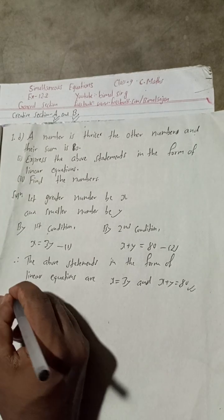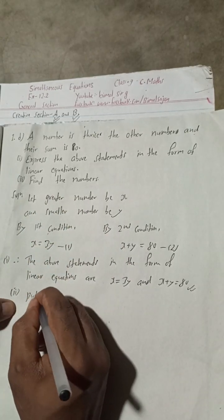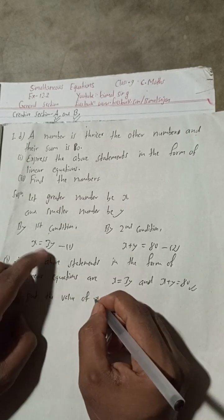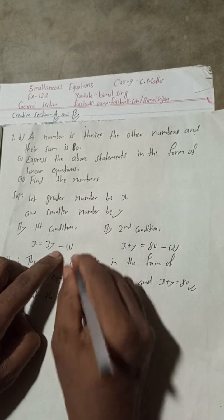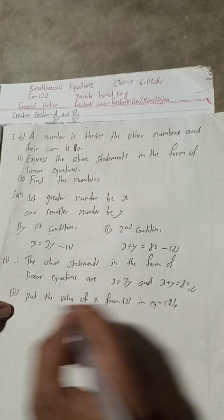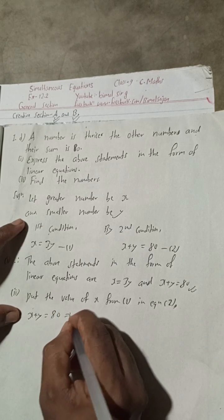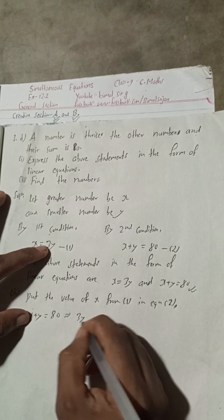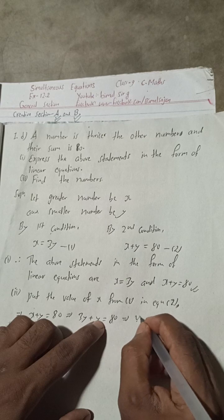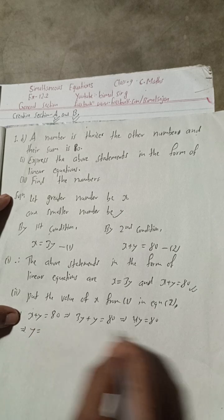Now find the numbers. Put the value of X from equation one into equation two. This implies X plus Y equals 80. In place of X, I will put 3Y, so 3Y plus Y equals 80. Therefore, 4Y equals 80, which implies Y equals 80 divided by 4.